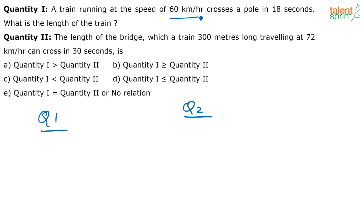A train running at a speed of 60 kilometers per hour crosses a pole in 18 seconds. So whenever you have questions on time and distance, first check the units. The units of speed, time, and distance should be similar. Here it is in kilometers per hour, and here it is seconds, so convert everything into the same unit.